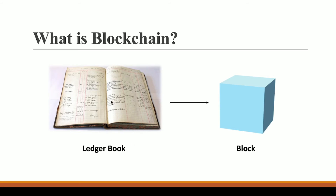The problem with a traditional ledger is that it is mutable. Centralized databases and ledgers are mutable — mutable means you can erase or manipulate the data. You can remove a page from a notebook or erase handwriting. In a database, the person in charge can completely erase one of the transactions.